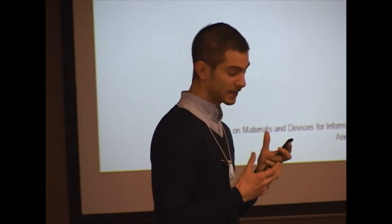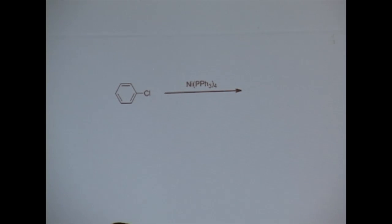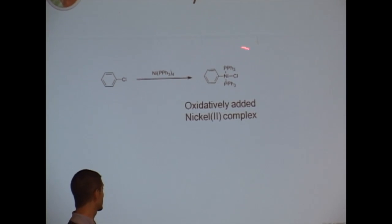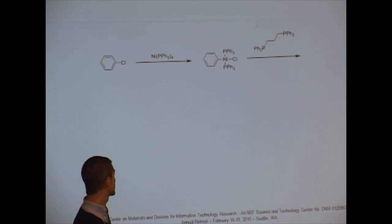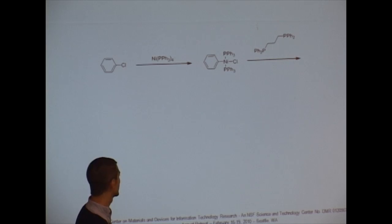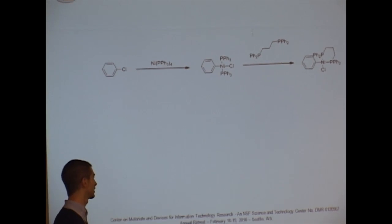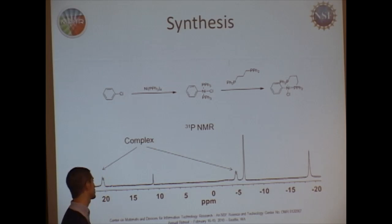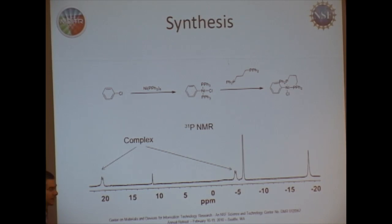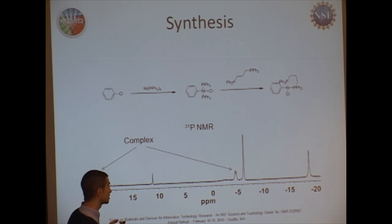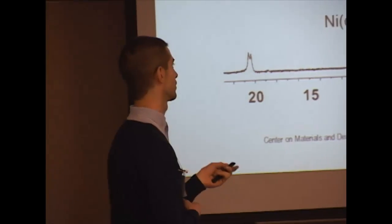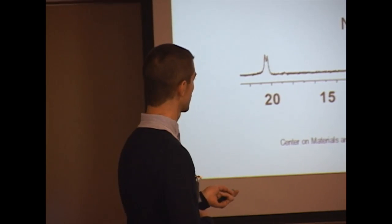We went for a very simple synthesis. We took chlorobenzene, added nickel tetrakis-triphenylphosphine, and formed an oxidatively added nickel complex. We showed this complex can polymerize P3HT. To mimic the Yokozawa work and get the best catalyst, we simply added DPPP to make a nickel complex that is an analogue of the initiating species seen before. You can monitor the reaction by phosphorus NMR — you can see two peaks corresponding to the different phosphorus environments. The reaction can be done by simply adding things sequentially without isolating intermediates, though it can be purified if desired.